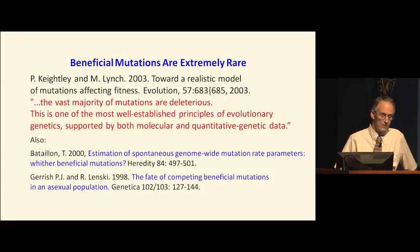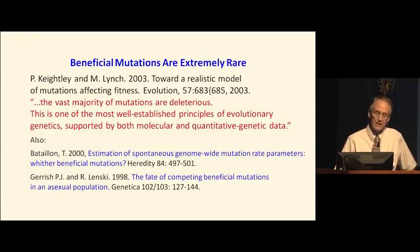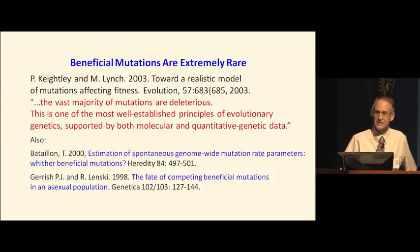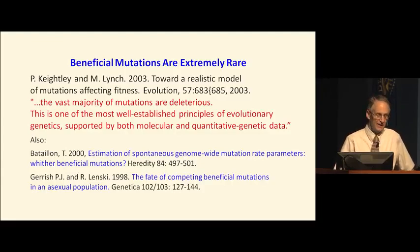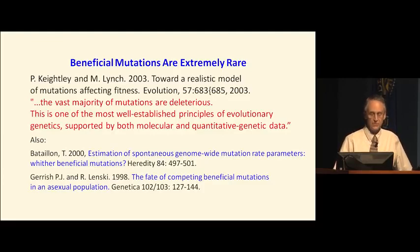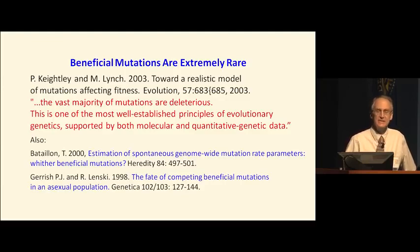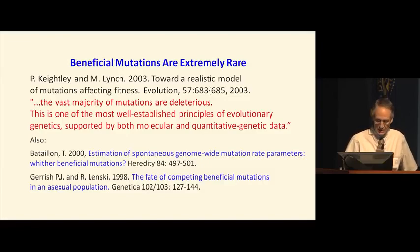Keightley and Lynch say the vast majority of mutations are deleterious, and this is one of the most well-established principles of evolutionary genetics, supported by both molecular and quantitative genetic data. One paper has a subtitle 'Whither Beneficial Mutations?' — the author argues that beneficials are so rare we can't measure how rare they are. Garrish and Lenski, looking at the long-term evolutionary experiment with bacteria, monitored sequence changes over time in bacterial populations and found that beneficial mutations were indeed exceedingly rare — they estimated one in a million mutations as beneficial.